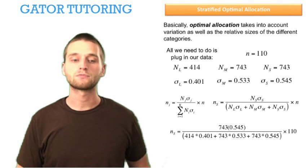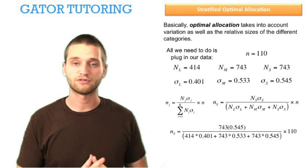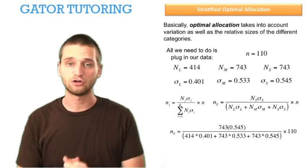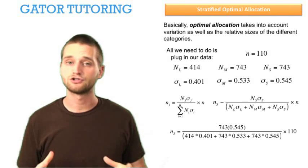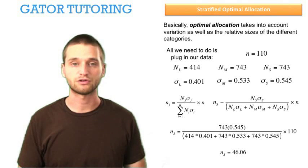And we find that the number of data that we should have in the new sample size, just for the small category, the size of the small strata in this new population of 110 observations total, should be 46.06.